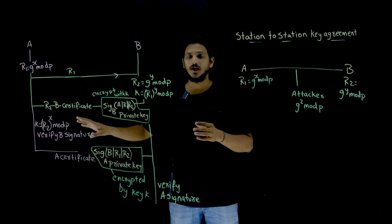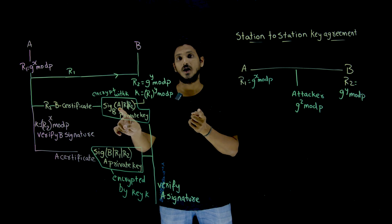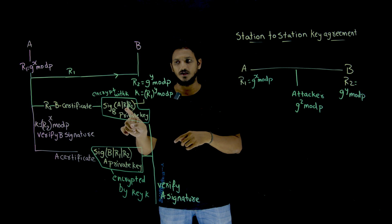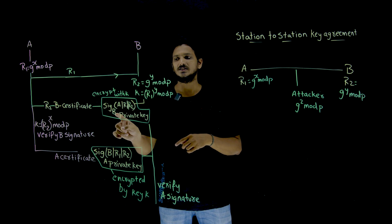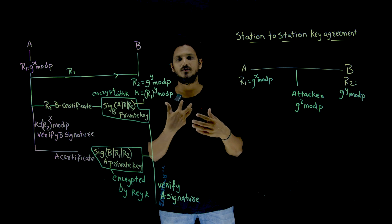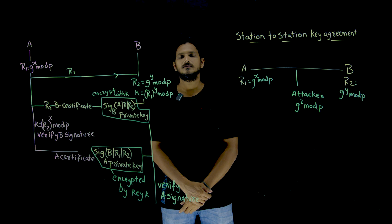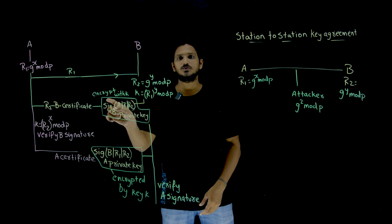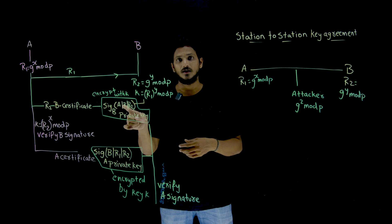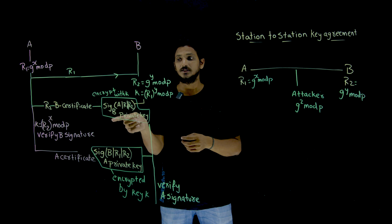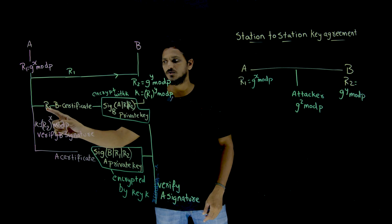Now, what does B send to A? Using this key K, B takes A's ID, concatenates it with R1 and R2, and generates a signature on (A_ID || R1 || R2) using B's private key. This entire signature is then encrypted with the key K. Along with this, B sends the R2 value and B's certificate.